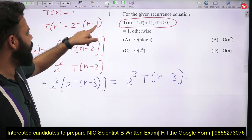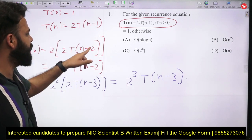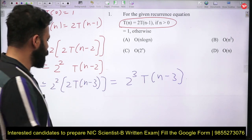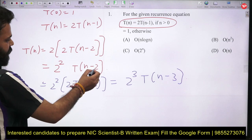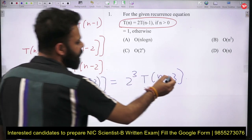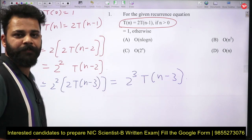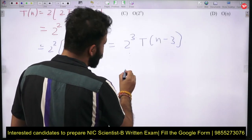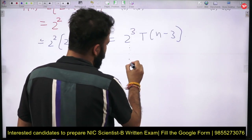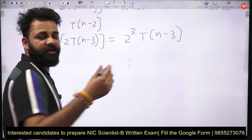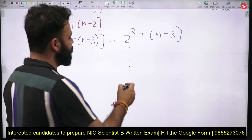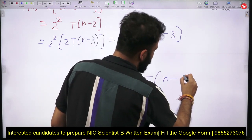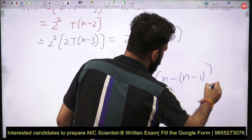We can see a clear pattern: when we have T(n-1), there is 2¹; when T(n-2), there is 2²; when T(n-3), there is 2³. Continuing this substitution, after n-1 substitutions, we arrive at 2^(n-1) · T(1).